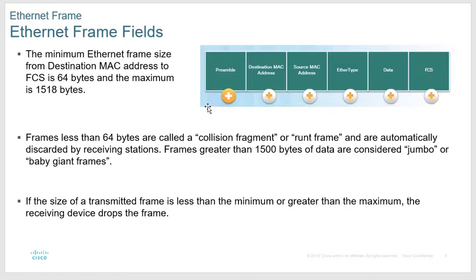There are some TCP/IP optimizers you can download that change your TCP size from 1500 to 1518, which allows you to put a little more data in each frame — theoretically faster. But if it goes a byte or two over and the addressing gets added on top and it hits 1519, that frame gets dropped and has to be resent. Never use those TCP/IP optimizer tools; they cause more trouble than they're worth.